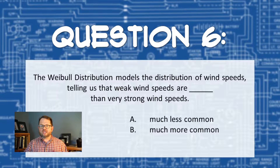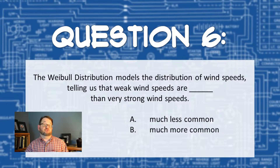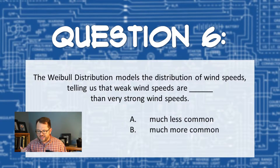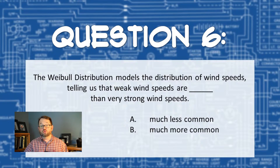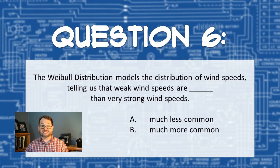Good job, it's B. The weak winds are vastly more common than the strong winds in the Weibull distribution, which is what we observe. It's why the Weibull distribution is actually a really good tool for simulating, for modeling the distribution of winds that we'll be expecting at a given location.